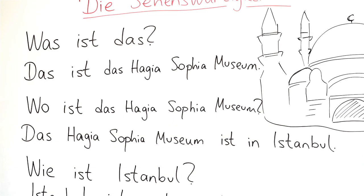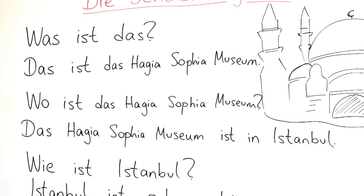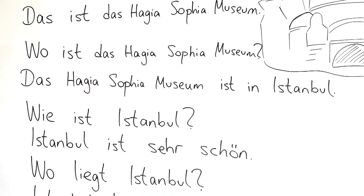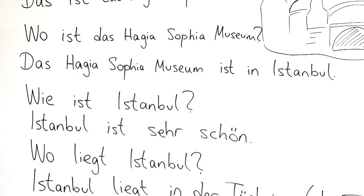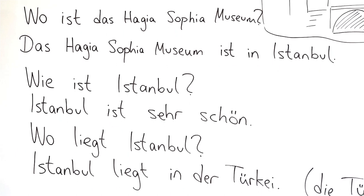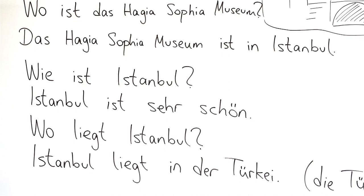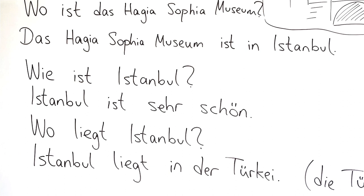Was ist das? Das ist das Hagia Sophia Museum. Wo ist das Hagia Sophia Museum? Das Hagia Sophia Museum ist in Istanbul. Wie ist Istanbul? Istanbul ist sehr schön. Wo liegt Istanbul? Istanbul liegt in der Türkei.